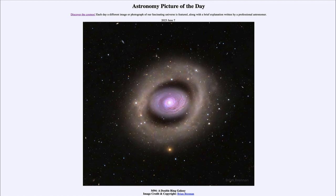So that was our picture of the day for June 7th of 2023. It was titled M94, a double ring galaxy. We'll be back again tomorrow for the next picture. So until then, have a great day everyone and I will see you in class.